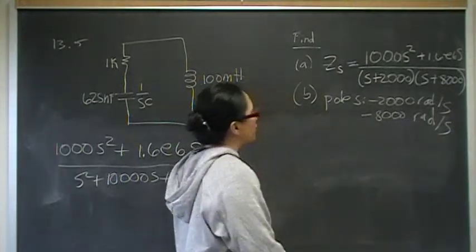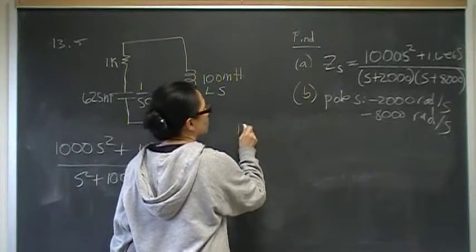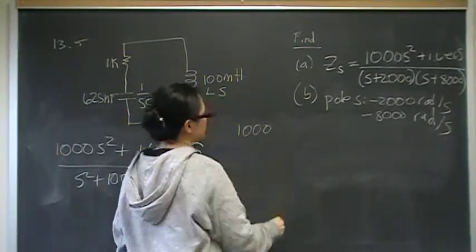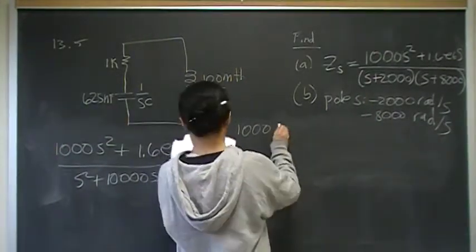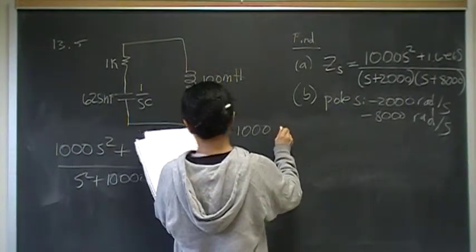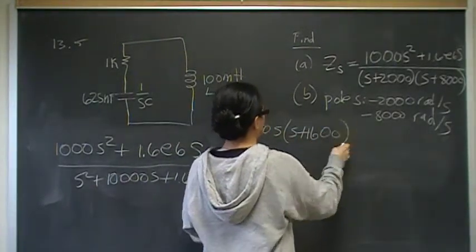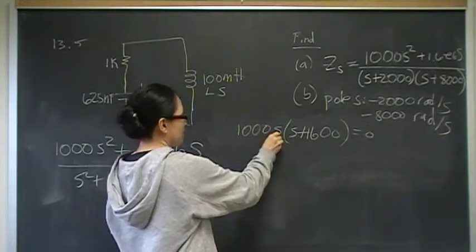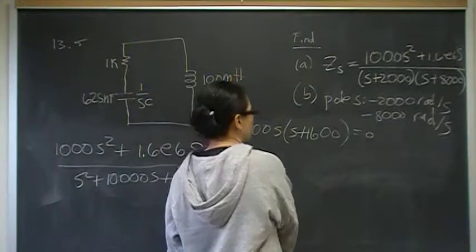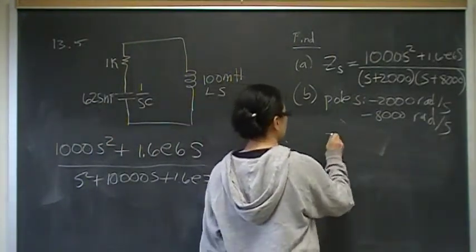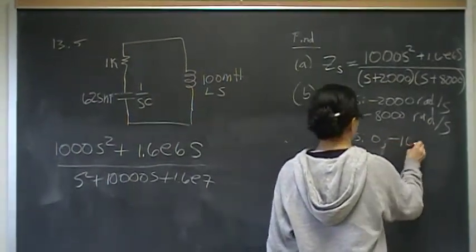And then, where you have a zero numerator is, you just factor out 1,000s and solve for that. Solving for the numerator equals zero. 1,000 s times s plus 1,600 equals zero. So, you'll have a zero when s is zero, and a zero when s is negative 1,600. So, your two zeros are zero and negative 1,600.